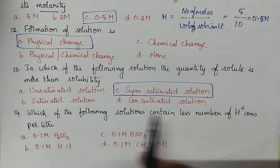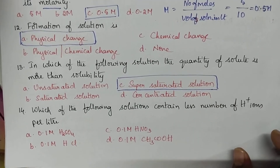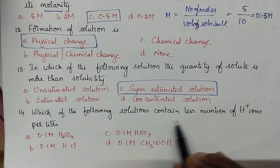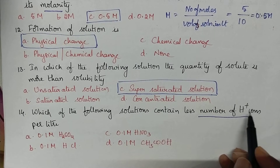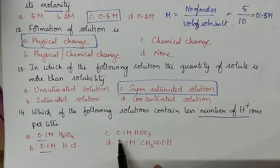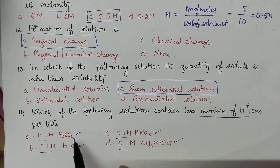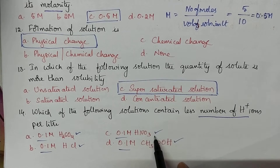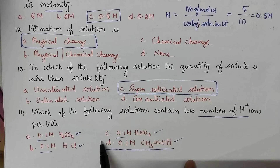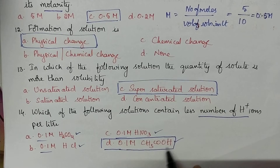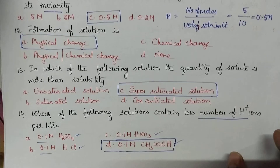Which of the following solutions contains fewer H⁺ ions per liter? All options have the same concentration. Sulfuric acid, HCl, and HNO₃ are strong acids — they undergo complete dissociation and contain more H⁺ ions. Acetic acid is a weak acid, so it dissociates to a lesser extent and contains fewer H⁺ ions. Option D is the right answer.